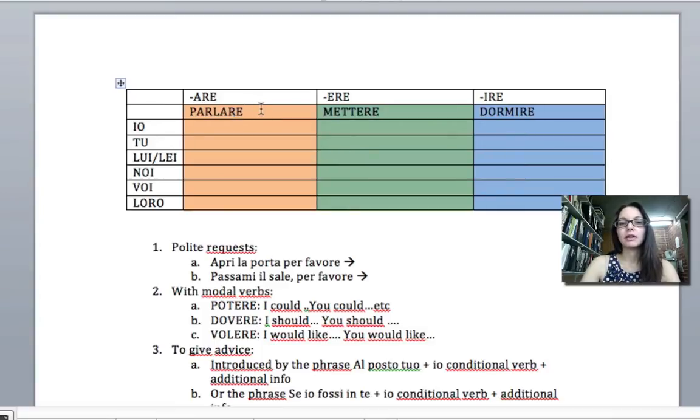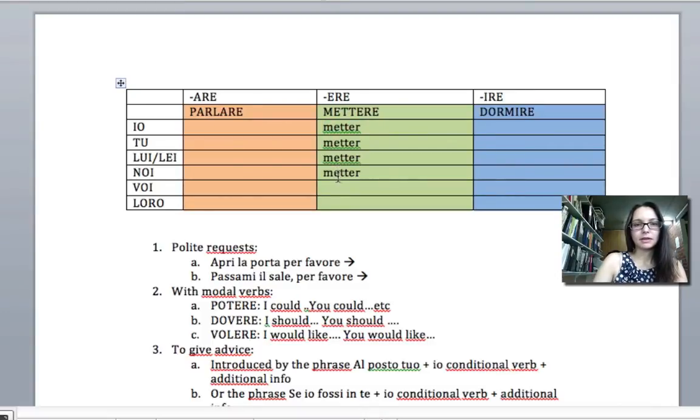I might start with -ere, -ire and then go back to -are. So we copy everything out and stop at the e. So mettere, and I'm just going to copy that for all six people. And then we add our endings.